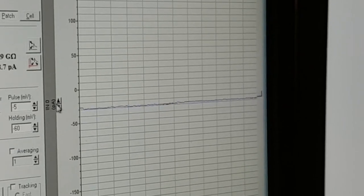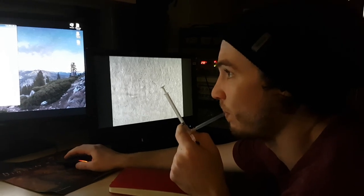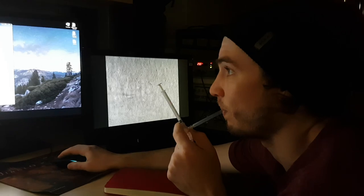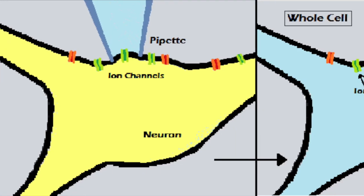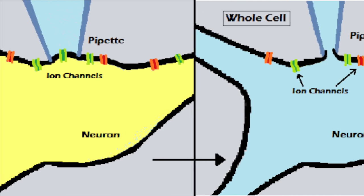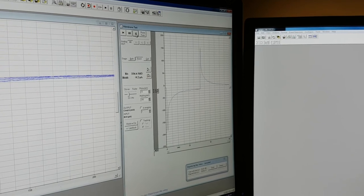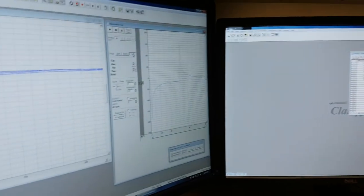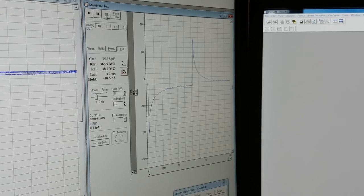Once a stable giga-ohm seal is formed, denoted by the tip resistance being maintained over 1 giga-ohm, we are then ready to perform a whole-cell patch. We then, once again, apply a slight negative pressure to rupture the cell membrane, allowing the glass recording pipette to, therefore, become an extension of the membrane. This is regarded to as the whole-cell patch clamp configuration. It can be noticed that there is a change in current, charging the membrane because of the cell capacitance. Since the membrane of the cell acts as a capacitor, when the glass pipette has gained access to the intracellular space, the current responses to the seal test should show an exponential decay.